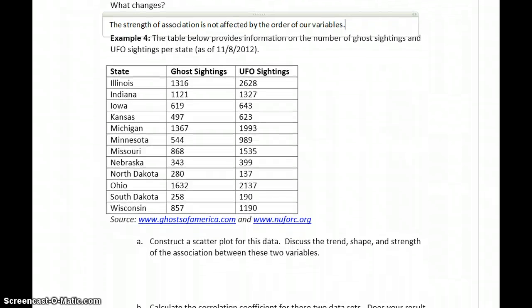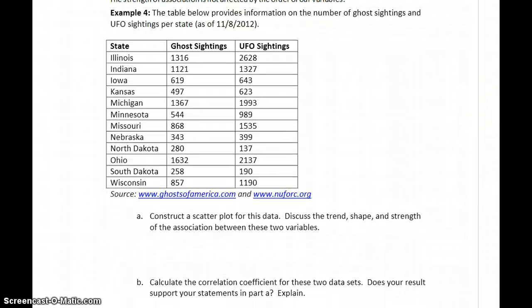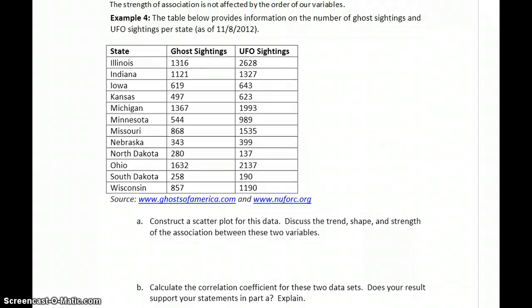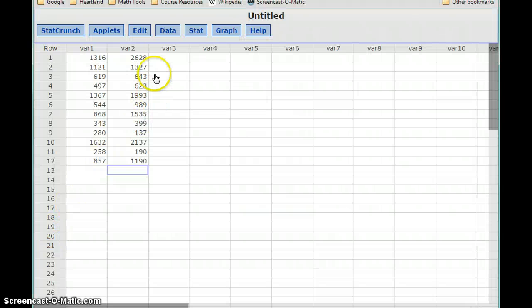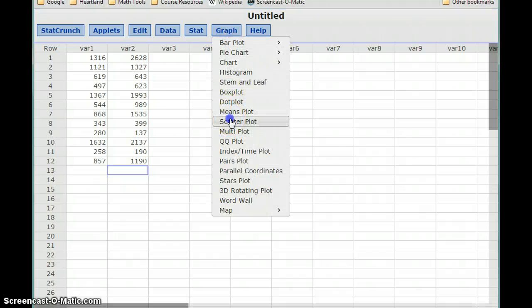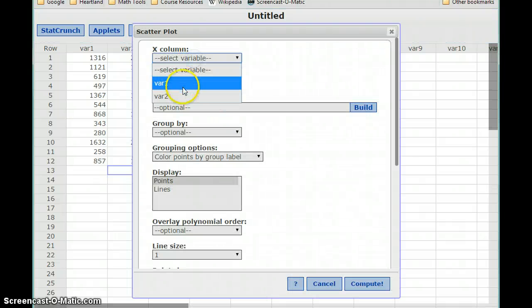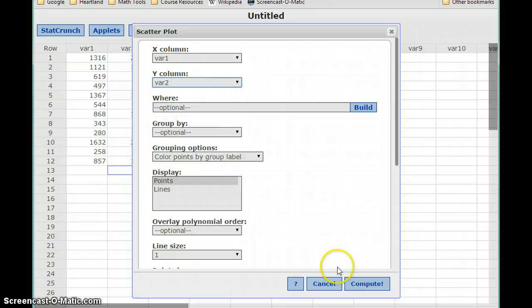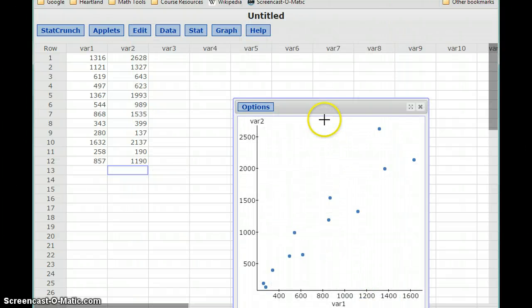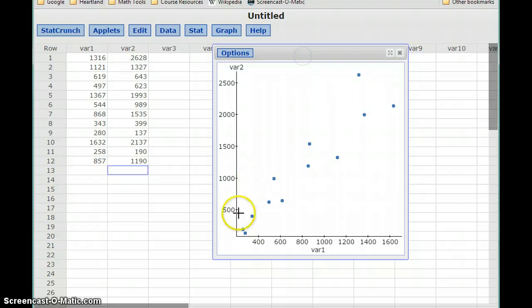So let's take a look at one last example here, calculating some correlation coefficients. The table below provides information on the number of ghost sightings and UFO sightings per state as of November 2012. We want to construct a scatter plot for this data and discuss the trend, shape, and strength of the association between the two variables. So with our updated data in StatCrunch, we want to construct a scatter plot. We'll indicate our two variables and provide an interpretation for the scatter plot.